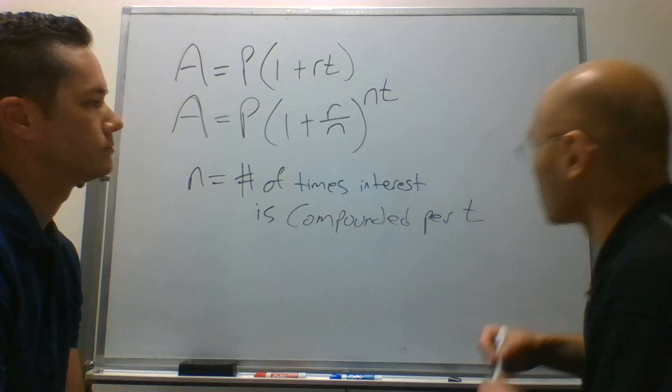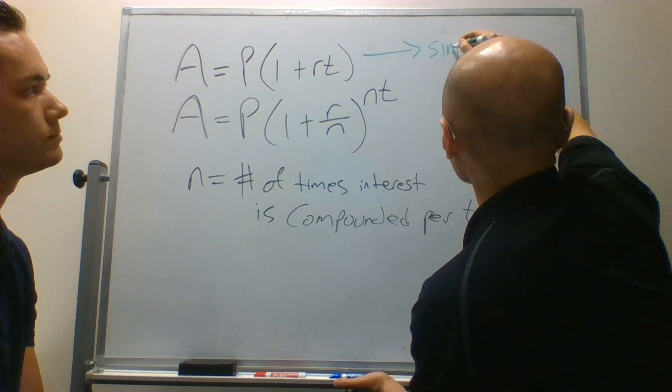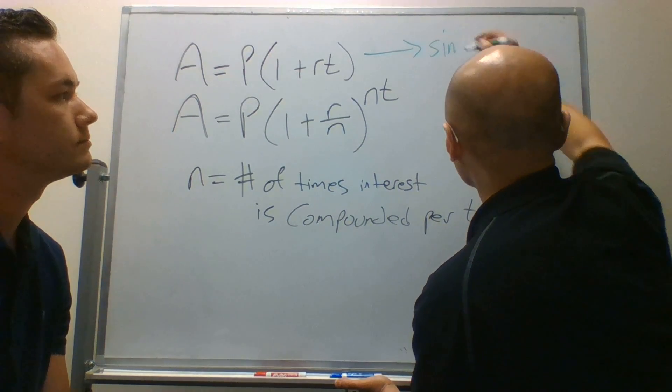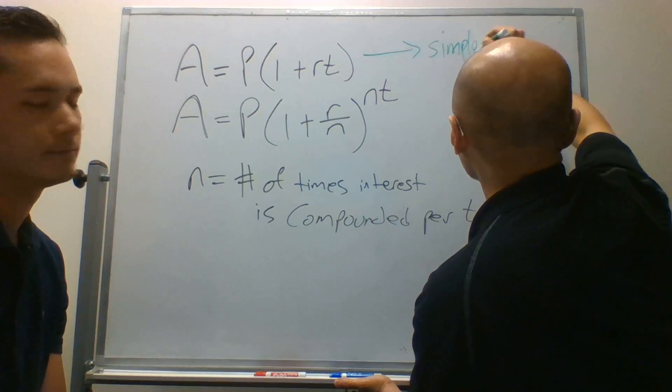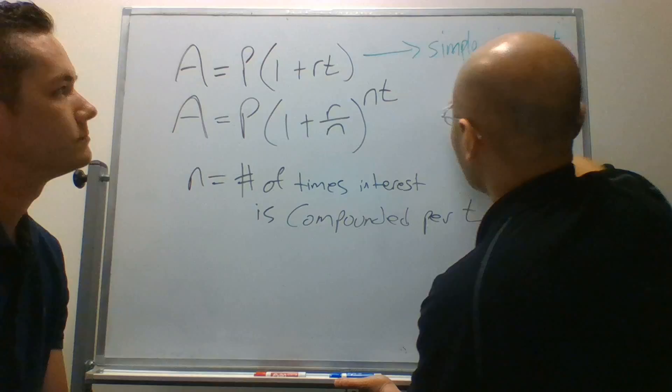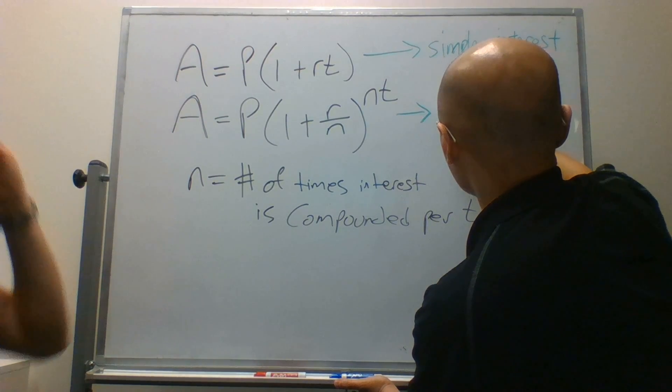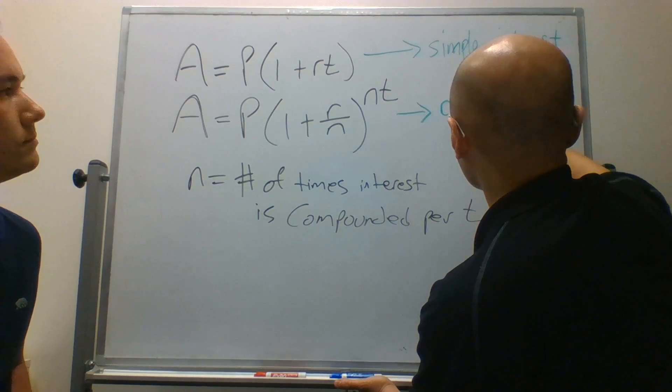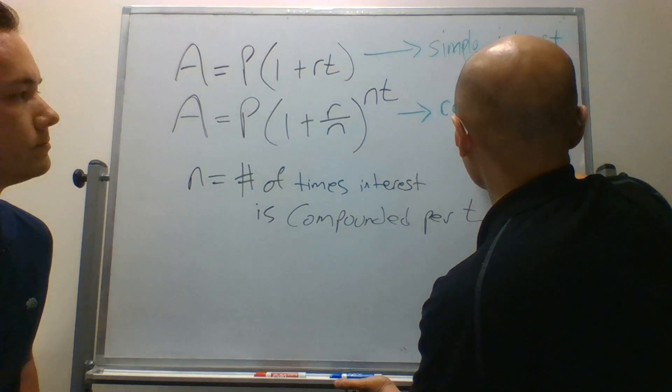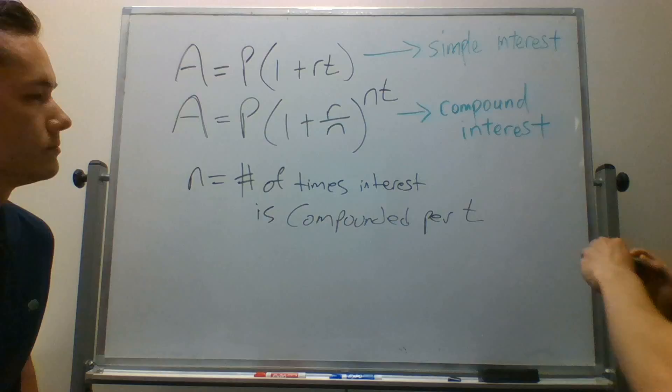So let's just make sure we clarify this for everybody here. This is the formula for simple interest, and this is the formula for compound interest.